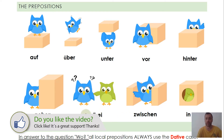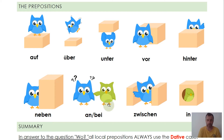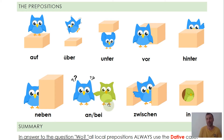A short note here: an and bei can mean the same thing, but bei is usually used for human beings. For example, ich bin bei Oma — I'm at grandma's. We can technically use bei for everything, but if it's not a human being, we usually prefer an. For example, ich bin an der Bushaltestelle — I am at the bus stop.